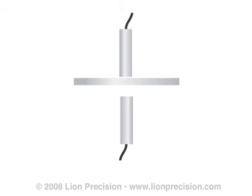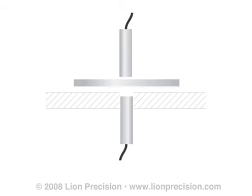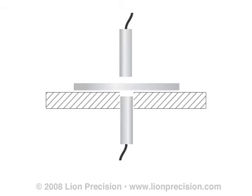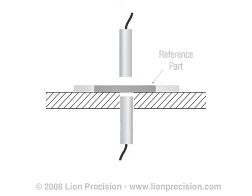The part can be measured with it suspended between the two sensors, or with one sensor mounted in the resting surface. Again, a known thickness is established as a reference point and all subsequent measurements indicate the amount of deviation from that reference.